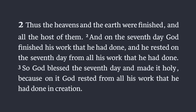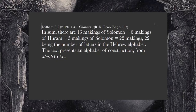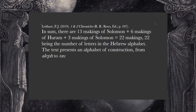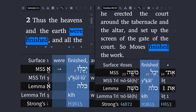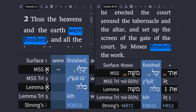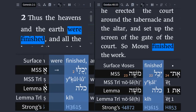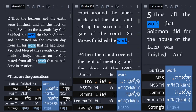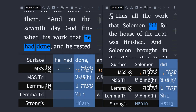Commenting on this 'make' language — which is 'asa' in Hebrew — Lightheart writes in his commentary on page 107: 'In sum, there are 13 makings of Solomon, 6 makings of Hurim, and 3 makings of Solomon. So in total that's 22 makings — 22 being the number of letters in the Hebrew alphabet. The text presents an alphabet of construction from Aleph to Tav.' We noted in the menorah video that the lampstand had 22 cups. This 'asa' language also connects back to older makings. In Genesis 2:1 we're told the heavens and the earth were finished using the same term, including the tabernacle narrative near the very end of Exodus. The other term usually translated 'work' is used in all three passages, as well as the 'asa' term, and that binds all three passages together: original creation by God, the tabernacle's construction by Moses, and the temple's construction by Solomon.